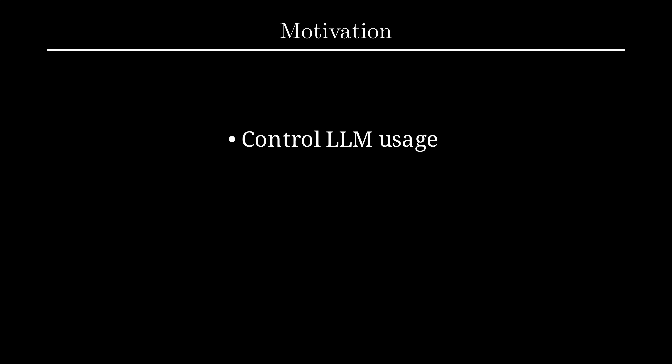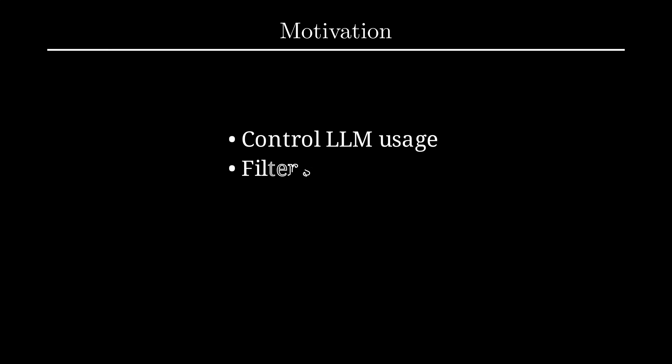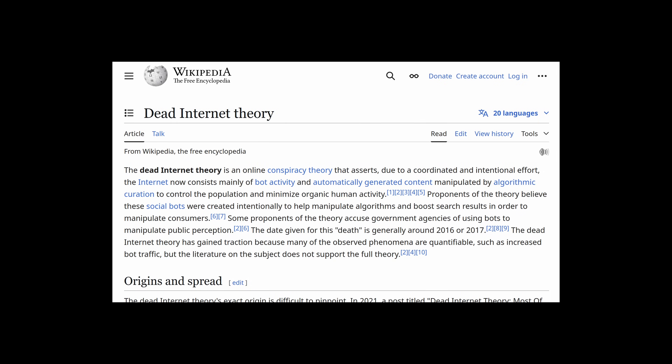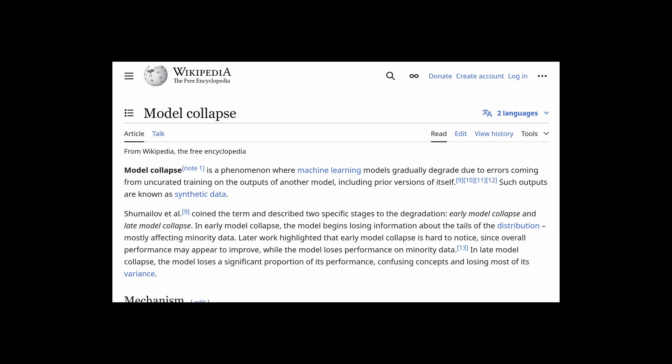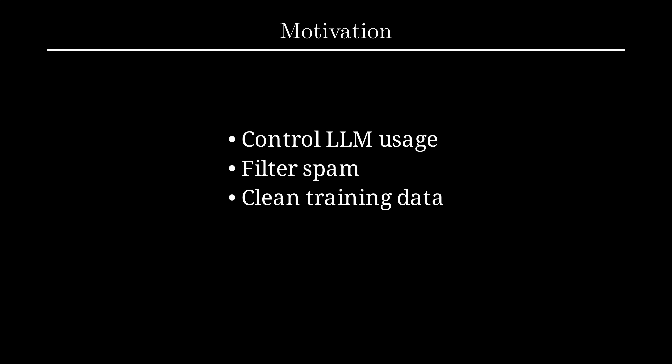As already mentioned, we may want to detect prohibited use of generated text. Also, LLMs have made it straightforward to produce high-quality spam and scam messages. A watermark which is unknown to such an adversary can be used in a spam filter to better remove those messages. Due to the widespread success of LLMs, there is more and more generated text publicly available on the internet, and training datasets will inevitably contain more of it. This holds a risk of model collapse, where a model's biases get reinforced and overall generation quality decreases. When generated text is watermarked, it can be filtered out before training.